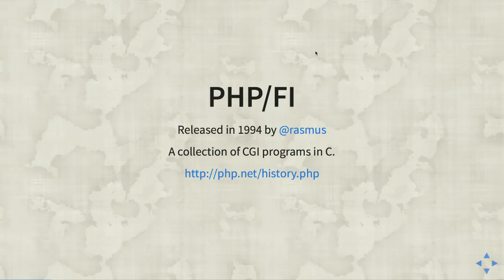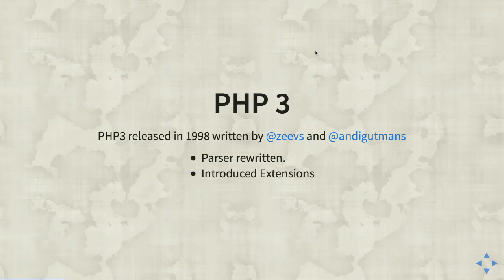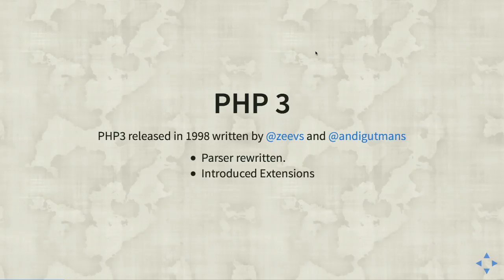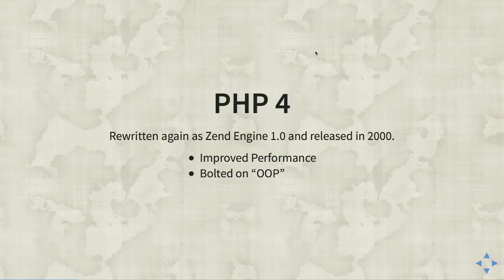PHP was deliberately designed to just do what was needed at the time and to look like C — it's a very C-like language. PHP 3 was released in 1998 when Zend's founders got involved and rewrote the parser as a college project. This was the first version to introduce extensions, which were really important because they allowed anyone who knew how to write them to integrate with MySQL, Postgres, Redis, and others. That extensibility was really useful and helped PHP grow.